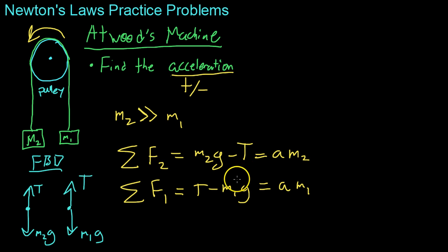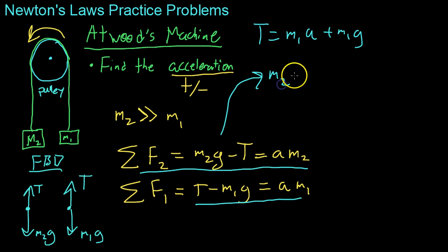Now from here, all you have to do is solve for the tension in terms of one and then substitute it in. So we'll just say that T equals M1a plus M1g from this equation down here. And then plugging that into the equation for the sum of the forces on number two, we get that M2g minus M1a plus M1g, because that's our substitution for the tension in the string, equals M2a.